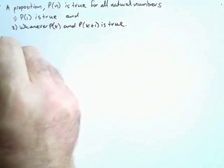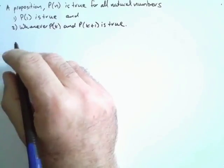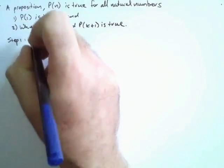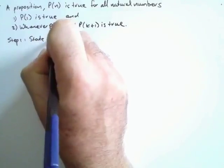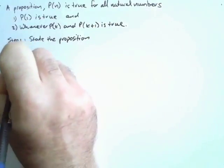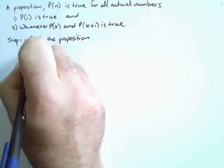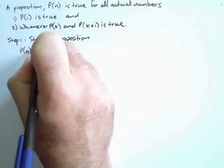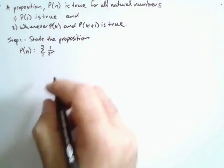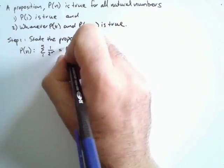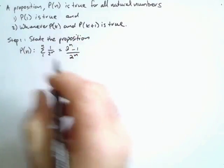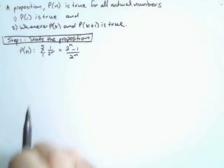I'm going to take you step by step. Step 1 is to state the proposition. I'm going to say that P(n), exactly as given, is the sum of 1 over 2^r from 1 to n, and we propose that that is true. That is step 1 — state the proposition.